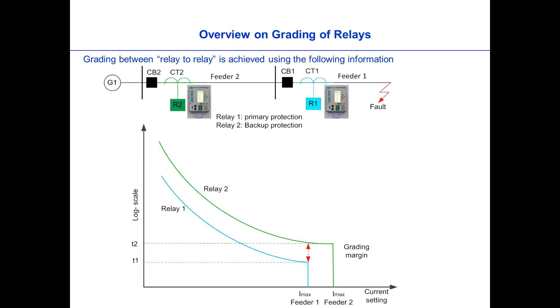Here is what we need to know. For example, grading between two relays or relay to relay is actually using the following information. We must have the information. For example, when we have two relays, relay one and relay two.